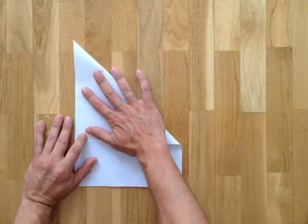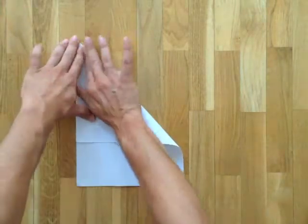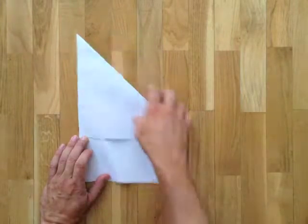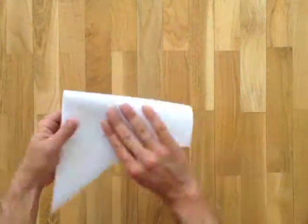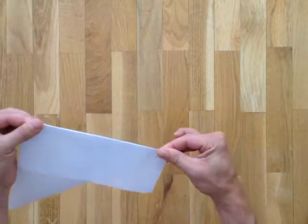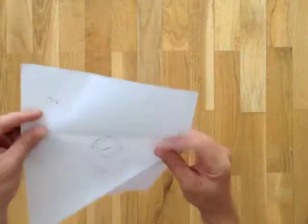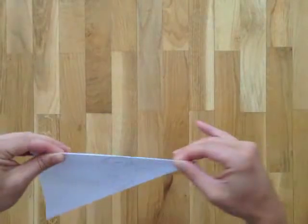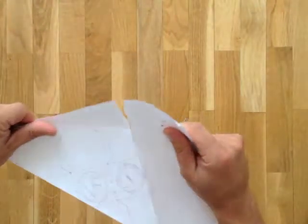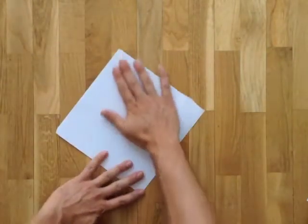So from our rectangular piece of paper, we fold the top corner down like this, and we move the extra rectangle that's left over down at the bottom, like so.